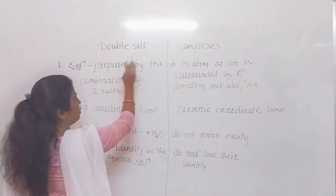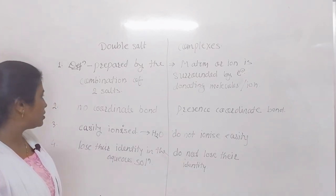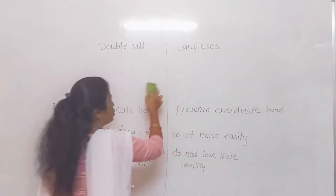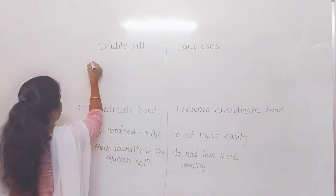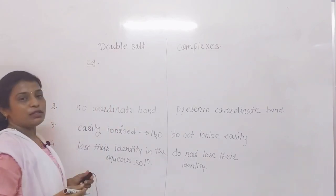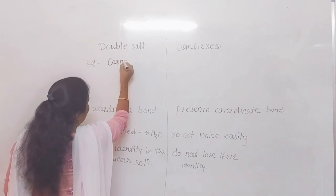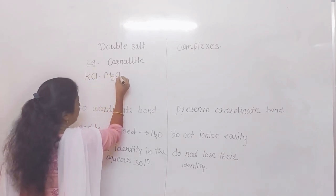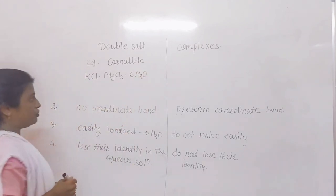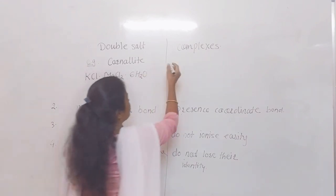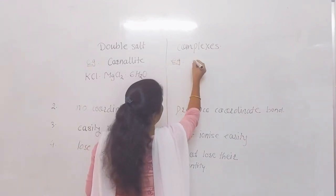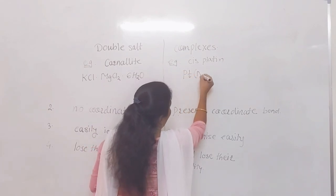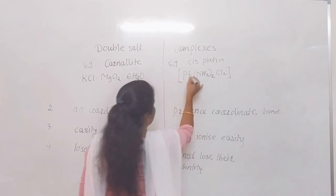Last point: the examples of double salts and complexes. The first example of a double salt is carnallite. The formula of carnallite is KCl·MgCl₂·6H₂O. For complexes, the first example is cisplatin, whose formula is [Pt(NH₃)₂Cl₂] in the cis form.